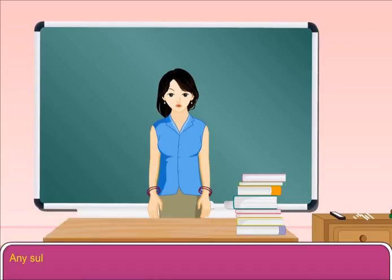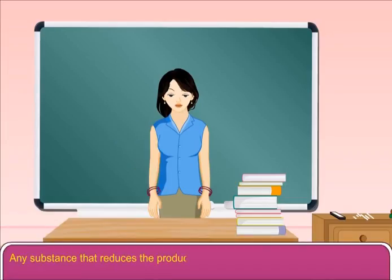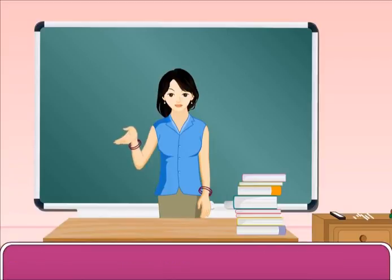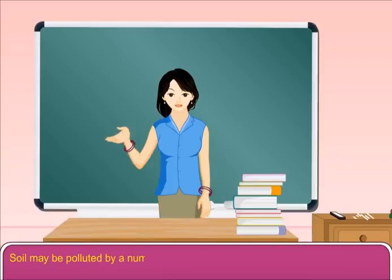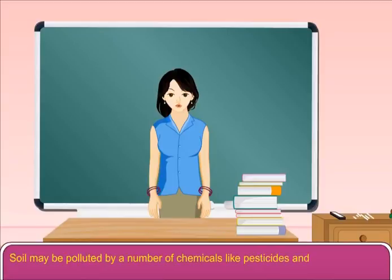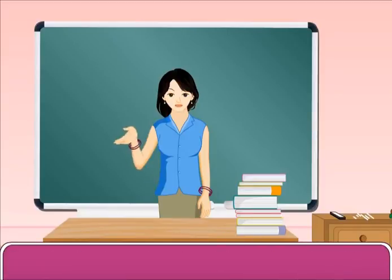Soil Pollution: Any substance that reduces the productivity of soil is called a soil pollutant. Soil may be polluted by a number of chemicals like pesticides and industrial wastes.